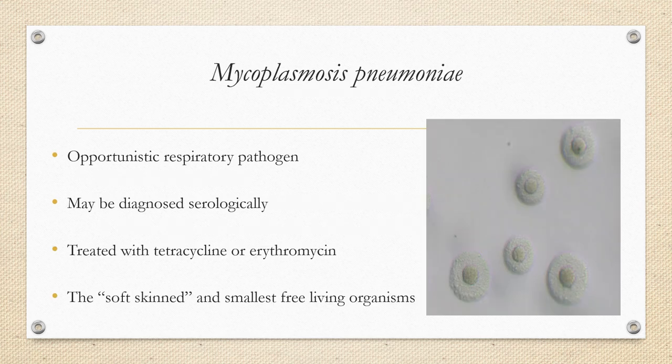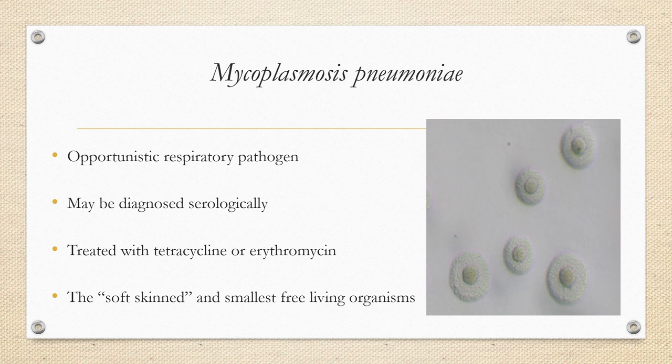Mycoplasma pneumoniae is an opportunistic respiratory pathogen that causes 10 to 30 percent of all pneumonia cases. It's difficult to culture and may be diagnosed serologically by IgM or IgG antibody levels, and treated with tetracycline or erythromycin. The best media to grow it is PPLO (Pleural Pneumonia-like Organism) media, named because it was first diagnosed in cows with pleural pneumonia. It will not gram stain due to its weak, thin cell walls, but a Dienes stain would show a fried egg appearance.